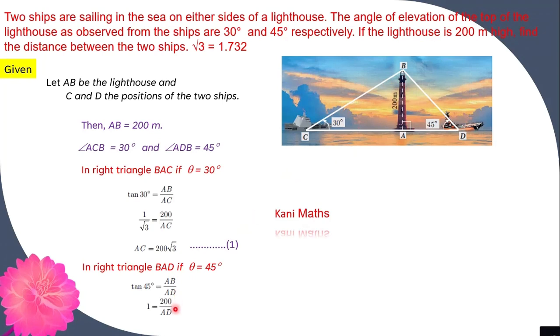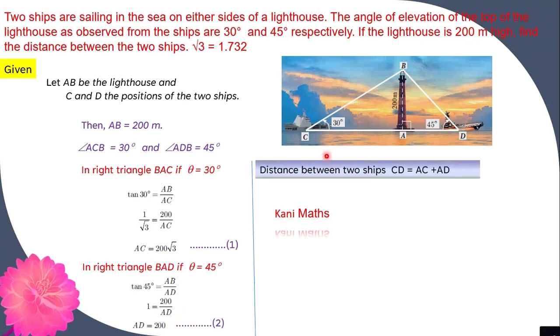So, 1 is equal to 200 by AD. If we cross-multiply, AD is equal to 200 meters. CD is equal to AC plus AD.